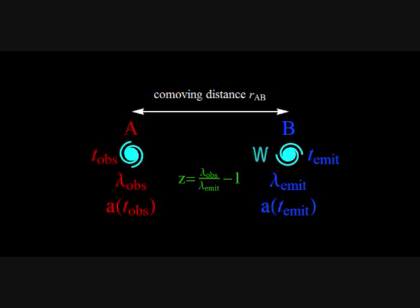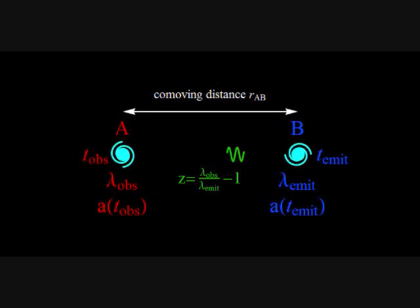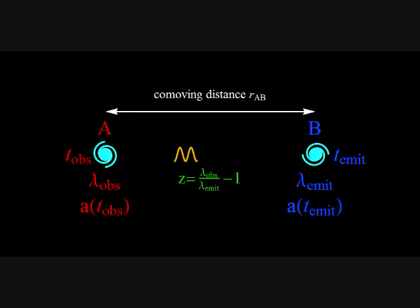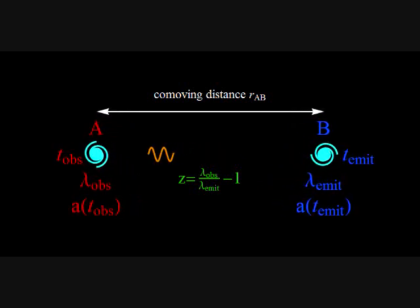Imagine that two galaxies are moving apart due to the expansion of the universe. Let's call them A and B. The co-moving distance between the galaxies is R sub AB.